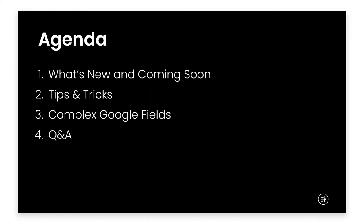We'll dive a bit deeper into Google's more complex fields. This will include topics around the URLs that get displayed on your Google listings — things that you can and can't control — as well as best practices. We'll discuss service area businesses and differences between business descriptions and editorial summaries. We'll save some time at the end to answer questions. If you have any questions throughout today's webinar, please throw those into the chat and we'll do our best to answer as many as we can.